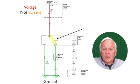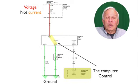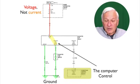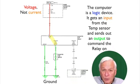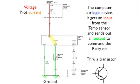Now we know that power and ground must connect if that load is going to work. So what connects them? Well the computer control connects them when it commands it on. The computer is a logic device. It gets an input from the temperature sensor and sends out an output to command the relay on. Now I've kept the colors consistent here with their part of the circuit. Blue is control, orange is current flow and green is ground.